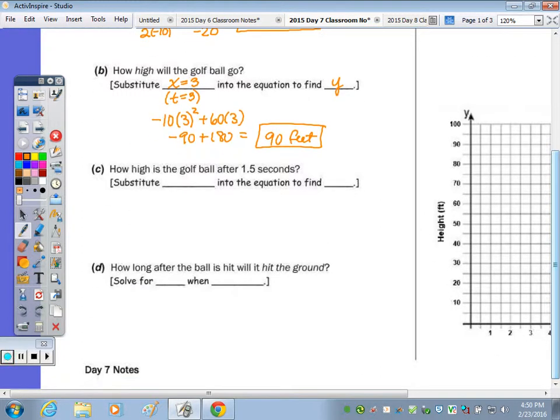Part C: How high is the golf ball after 1.5 seconds? We're just going to substitute an x value of 1.5 or t of 1.5 into the equation to find y again. So this is another point on the curve that's not the maximum point. So we substitute and get 67.5 feet.